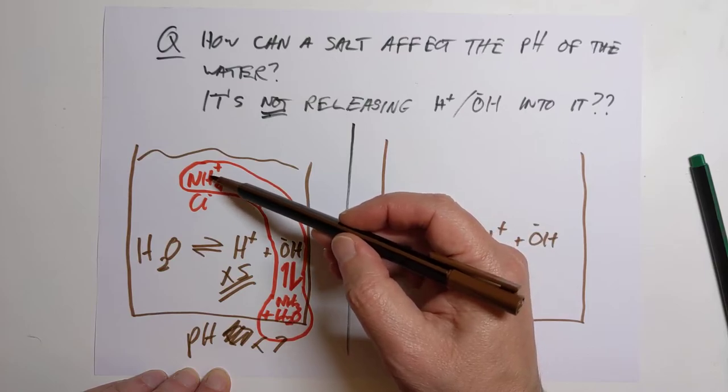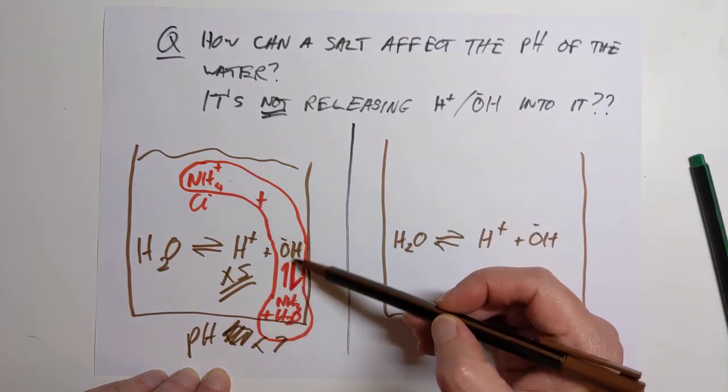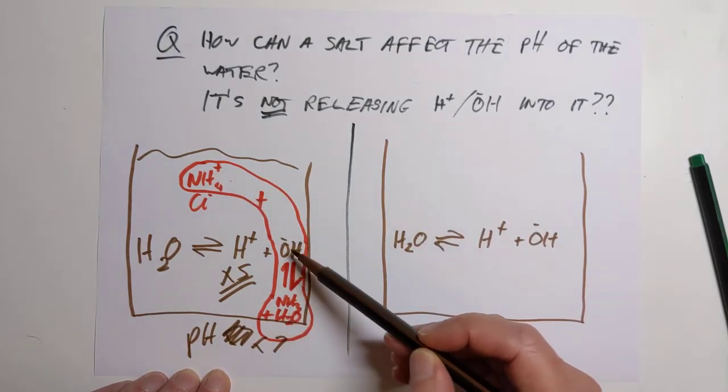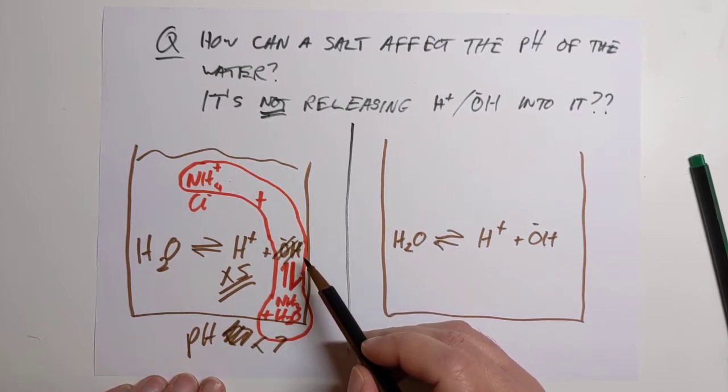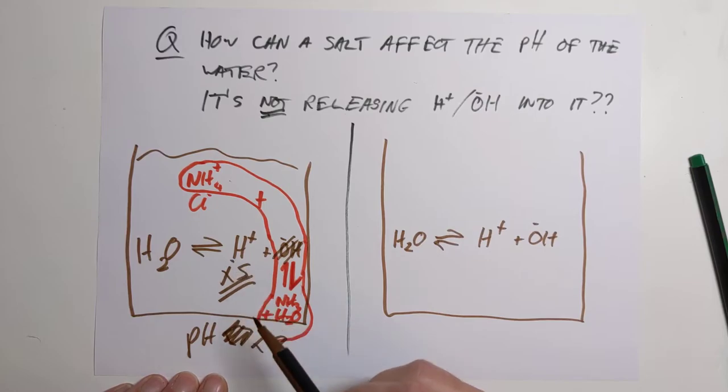The salt contains a weak base. So the weak base prefers to be on the molecule side. And these get removed. Not totally removed, but they do get reduced. Which leaves you with an excess of hydrogen ions. And your beaker of water looks like it has become acid. Because it has, I suppose, by definition.